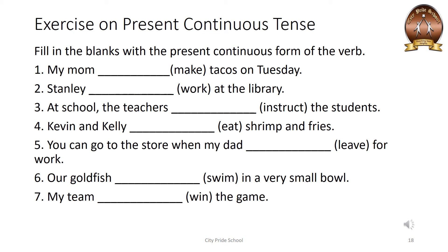Second sentence: 'Stanley dash at the library.' The verb given is 'work'. Stanley is singular, so we use 'is'. Your sentence will be: 'Stanley is working at the library.' Third sentence: 'At school, the teachers are instructing the students.' We used 'are' because 'teachers' is in plural form. Fourth sentence: 'Kevin and Kelly are eating shrimp and fries.' Kevin and Kelly are plural — more than one — that's why we use 'are'.